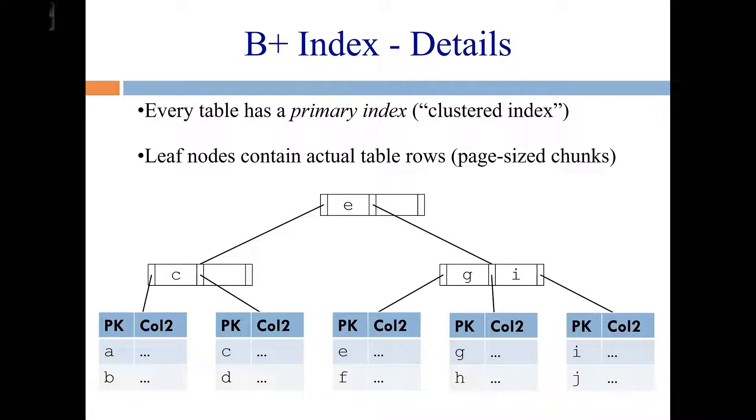It's special, though, in that the leaf nodes, the extra data held in the leaf nodes, are the full rows themselves. So the table is actually stored just in the primary index. It's not like there's some table out there and then there's a primary index referencing that table. The primary index is the table.